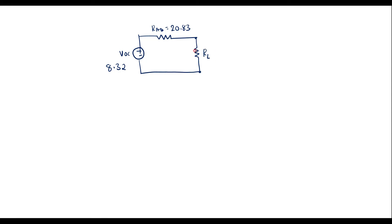According to maximum power transfer theorem, maximum power will be received when RL equals the network impedance. Here the network impedance is 20.83 ohms. So RL must be 20.83 ohms so that it will receive maximum power.